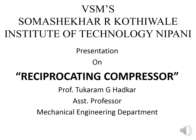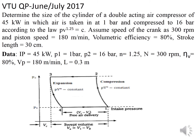We will start solving problems on reciprocating compressors. The first problem is from June/July 2017: determine the size of the cylinder of a double-acting air compressor of 45 kilowatt, in which air is taken in at 1 bar and compressed to 16 bar according to the law PV raised to 1.25. This index of 1.25 is very important — use this value, not 1.4 as in earlier problems.